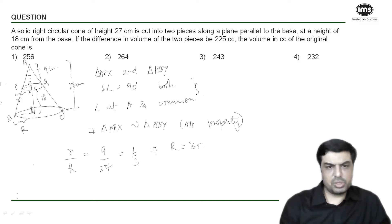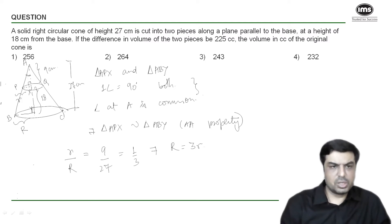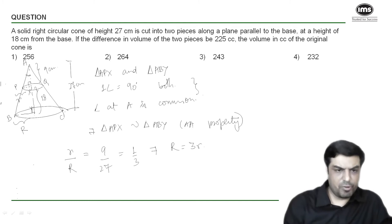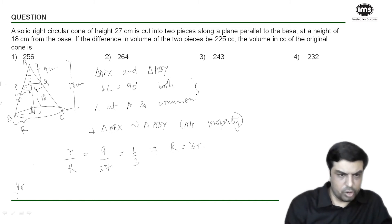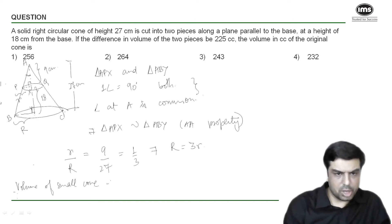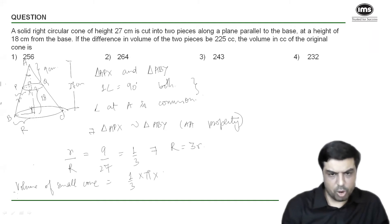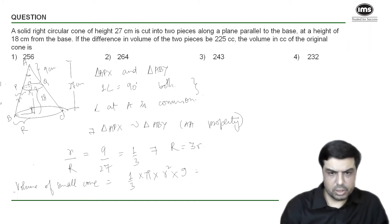We can approach this question in two different ways. The first method is to use the formula for volume of a cone. Volume of the small cone is (1/3) × π × r² × 9, which equals 3πr².